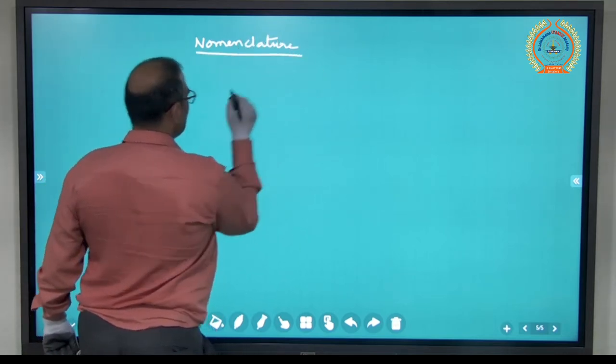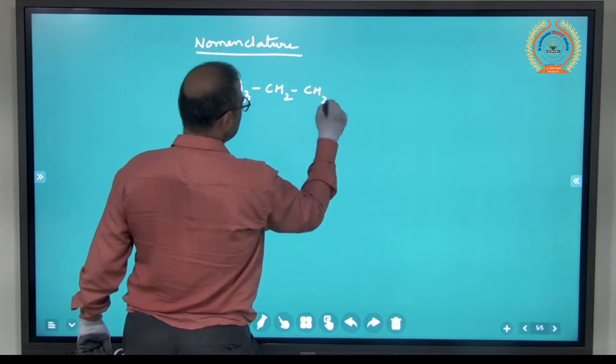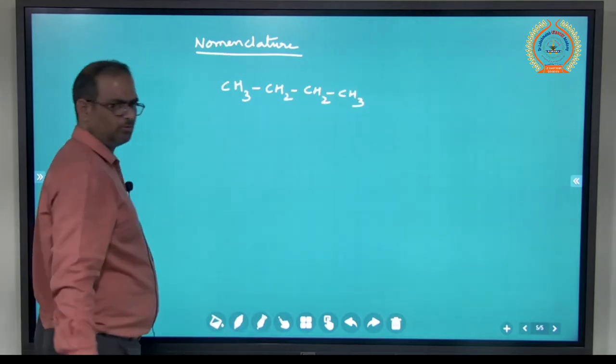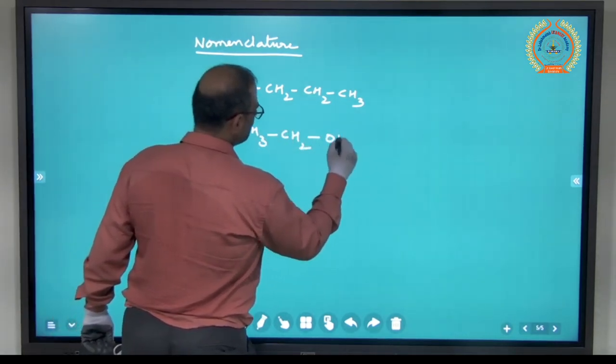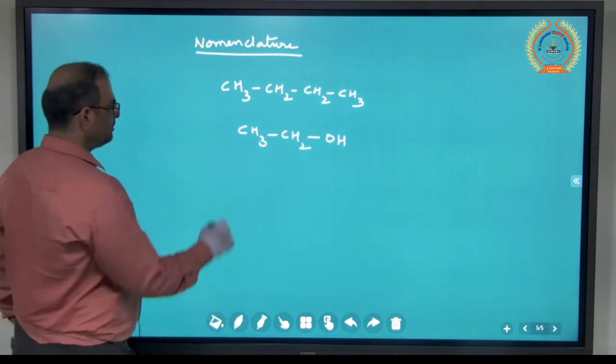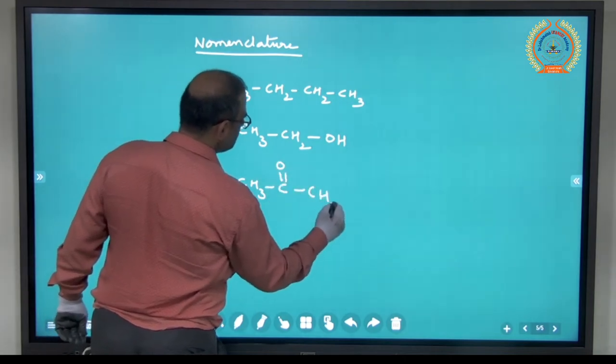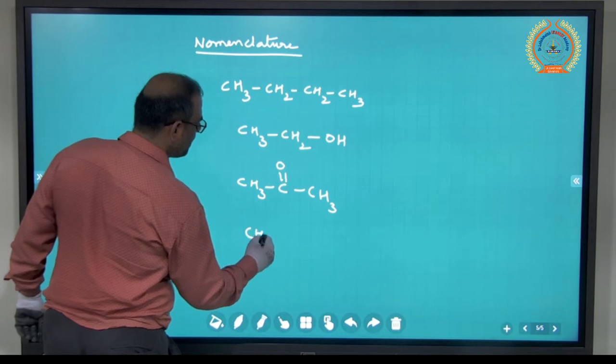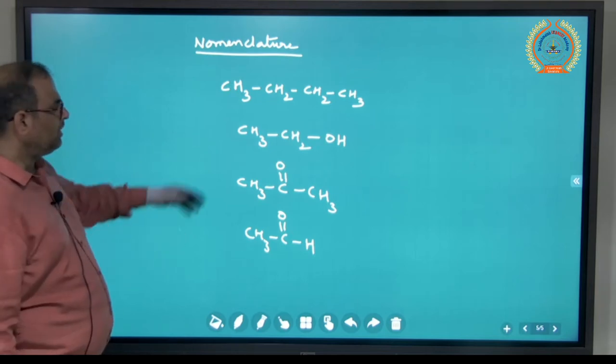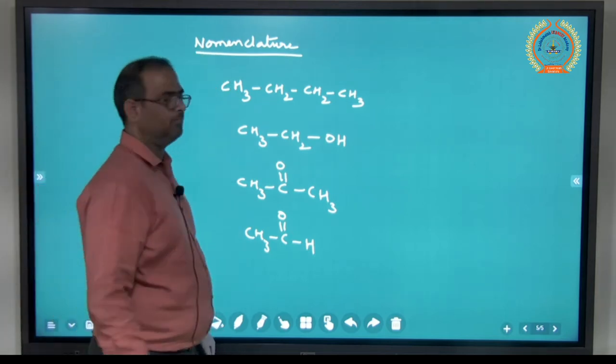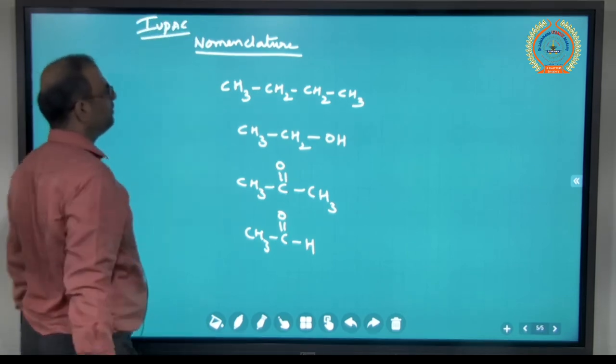If I am talking about nomenclature, let us say this is the compound, CH3-CH2-CH2-CH3. This is one compound. CH3-CH2-OH. This is another compound. CH3-CH2-CH3. This is another compound. CH3-CH2-CH2-OH. This is another compound. Now we need to name them based on IUPAC system.